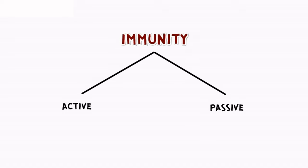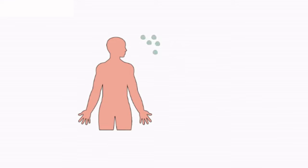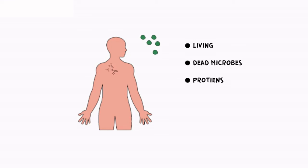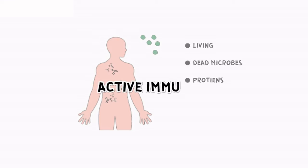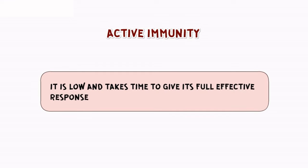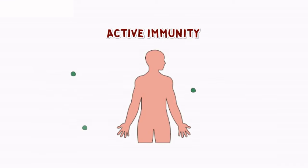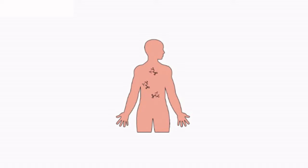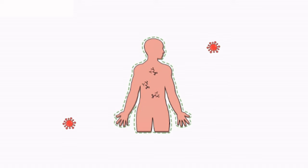Another differentiation in immunity is whether it is active or passive. When a host is exposed to antigens, which may be in the form of living or dead microbes or other proteins, antibodies are produced in the host body. This type of immunity is called active immunity. Active immunity is slow and takes time to give its full effective response. Injecting the microbes deliberately during immunization or natural infection induces active immunity. When ready-made antibodies are directly given to protect the body against foreign agents, it is called passive immunity.